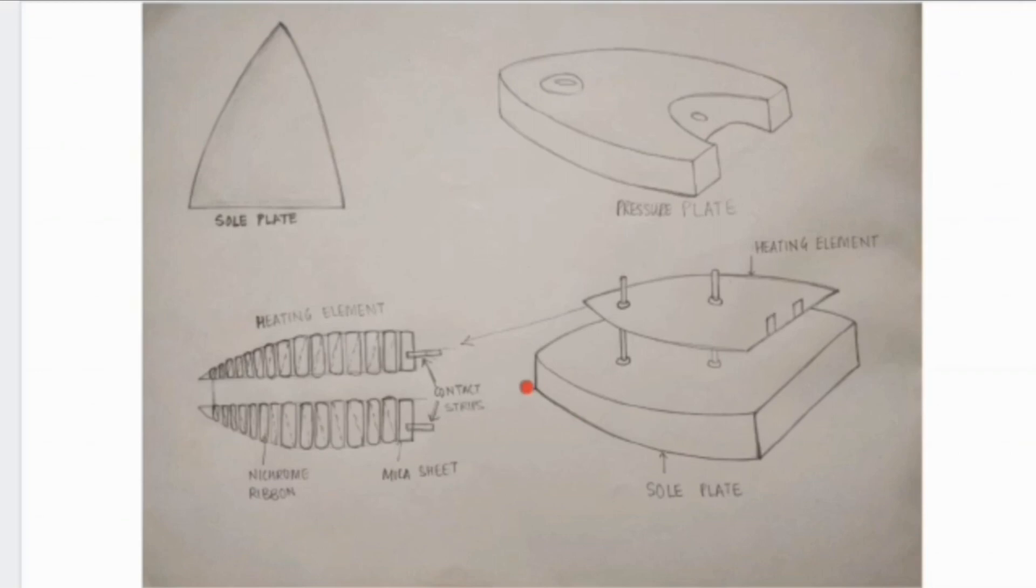Iron plate is the cover plate which covers all the parts of the iron. Cover plate is placed on top of the base plate. The heat gets conducted further from the cover plate to the base plate. This is how clothes are ironed. Thank you for watching.